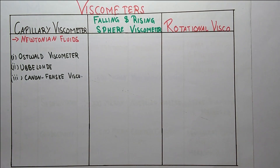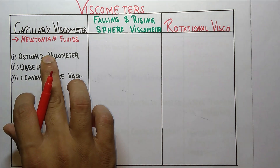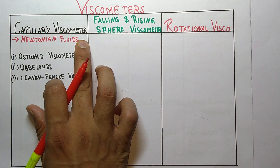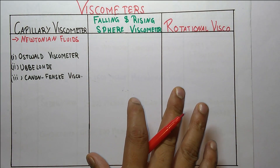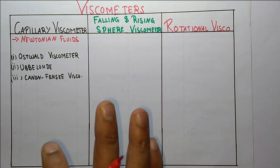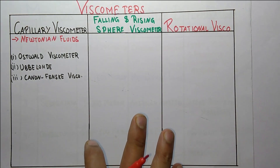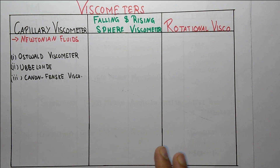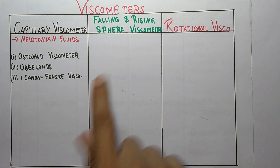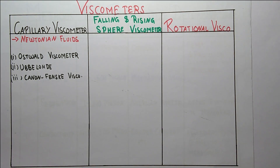Students, we are discussing these viscometers because exam questions may ask which instrument is an example of a capillary viscometer. For instance, in the 2017 GPET exam, a question was asked about which one is the rotational viscometer. Now, the next type is the falling sphere — or falling or rising sphere — viscometer.